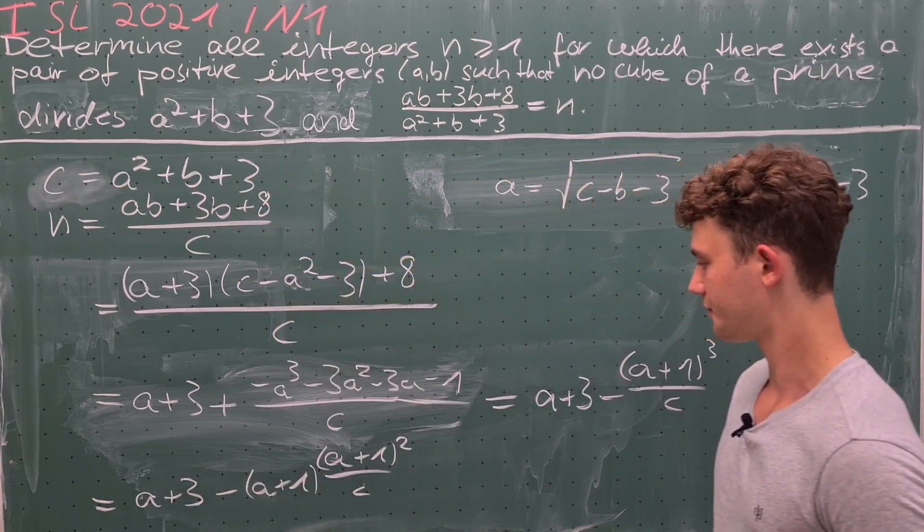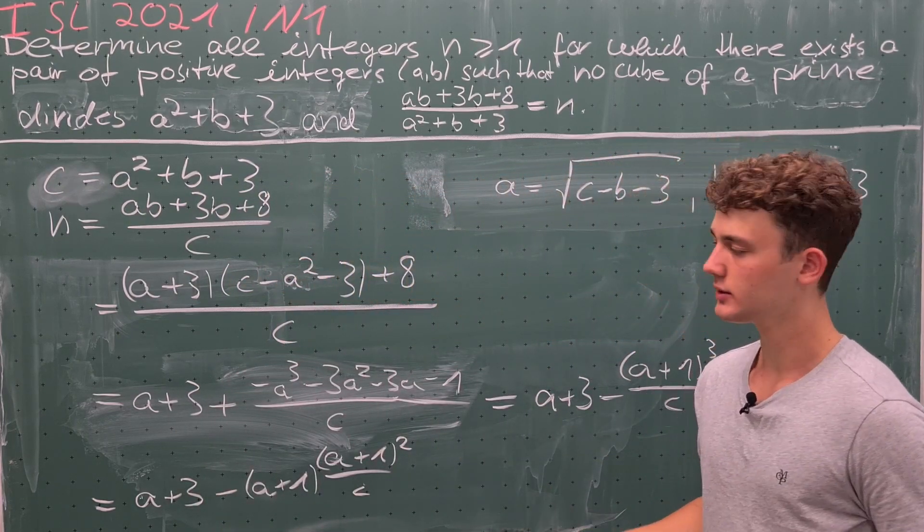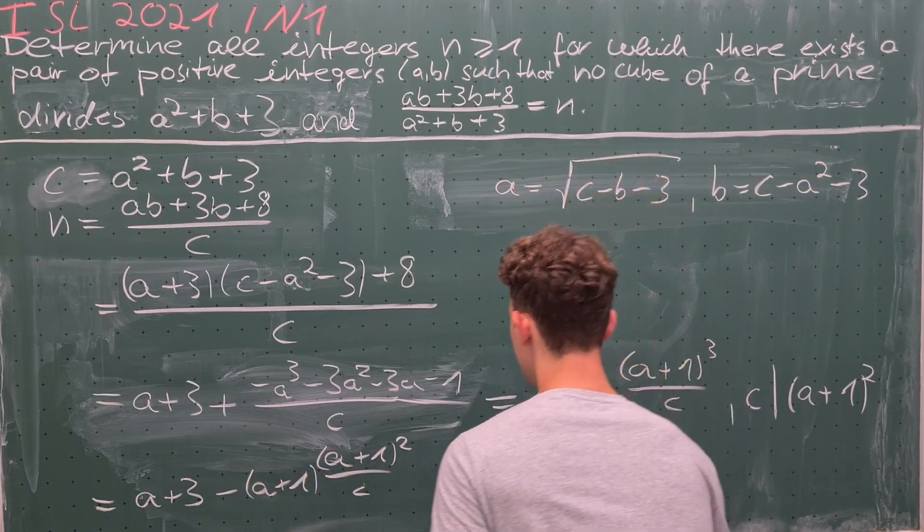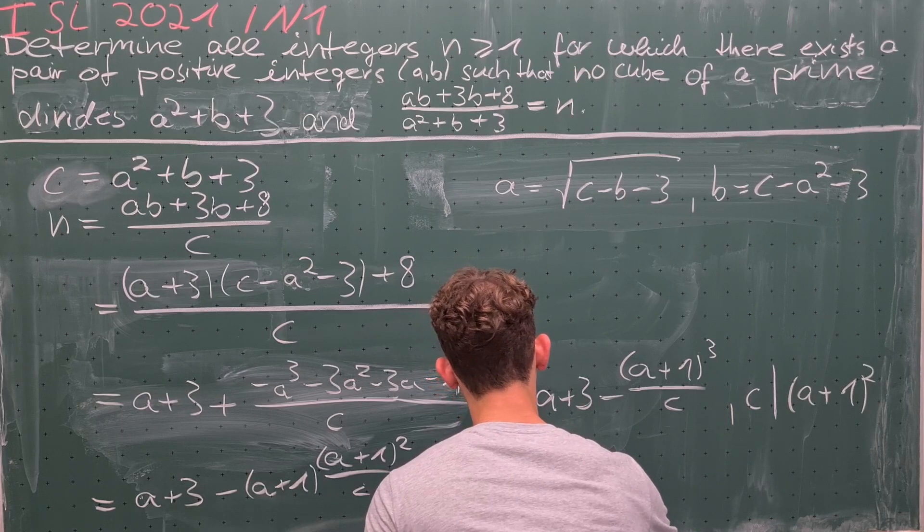Where (a+1)²/c is just some integer. We can go through some cases. First of all, this could be 1, then n equals 2. So this is one possible solution.